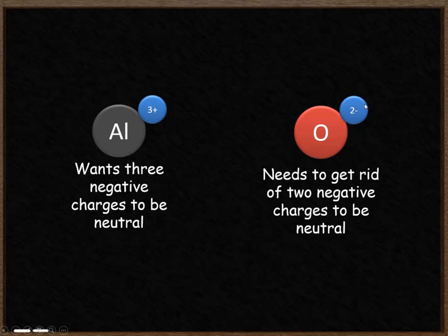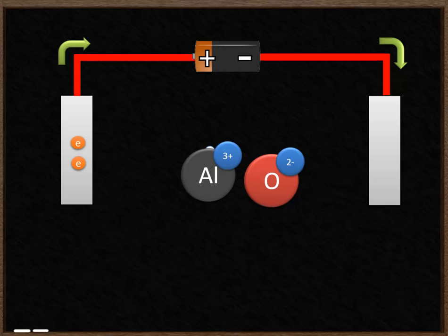Similarly, oxygen has a charge of negative 2. That means it's got two extra negative charges. It needs to get rid of those two negative charges to become neutral. So to help the aluminium get its three electrons and the oxygen to lose its two negative electrons, we're going to use an electrolysis circuit.